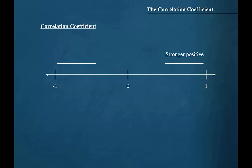When the linear correlation coefficient has a value close to negative 1, it indicates a stronger negative relationship between the variables. In other words, as the values of the explanatory variable increase, the values of the response variable decrease.